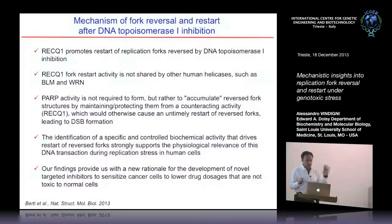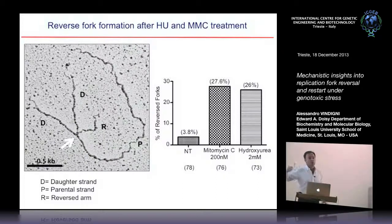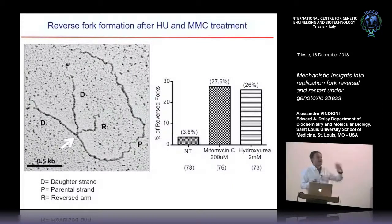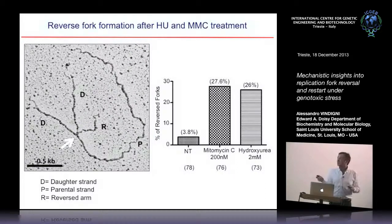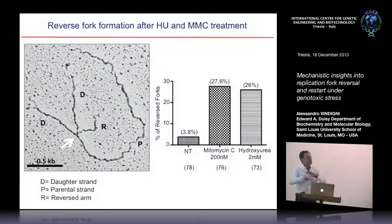This is the take-home message of our recently published work. Looking ahead, we now have evidence that fork reversal is a more general transaction, occurring not only in response to topoisomerase-1 inhibitors but also with mitomycin C, cisplatin — widely used for ovarian cancer treatment — and hydroxyurea. We propose that fork reversal is a novel general mechanism the replication machinery uses to deal with replication stress: it reverses, waits for the problem to be solved, then restarts.